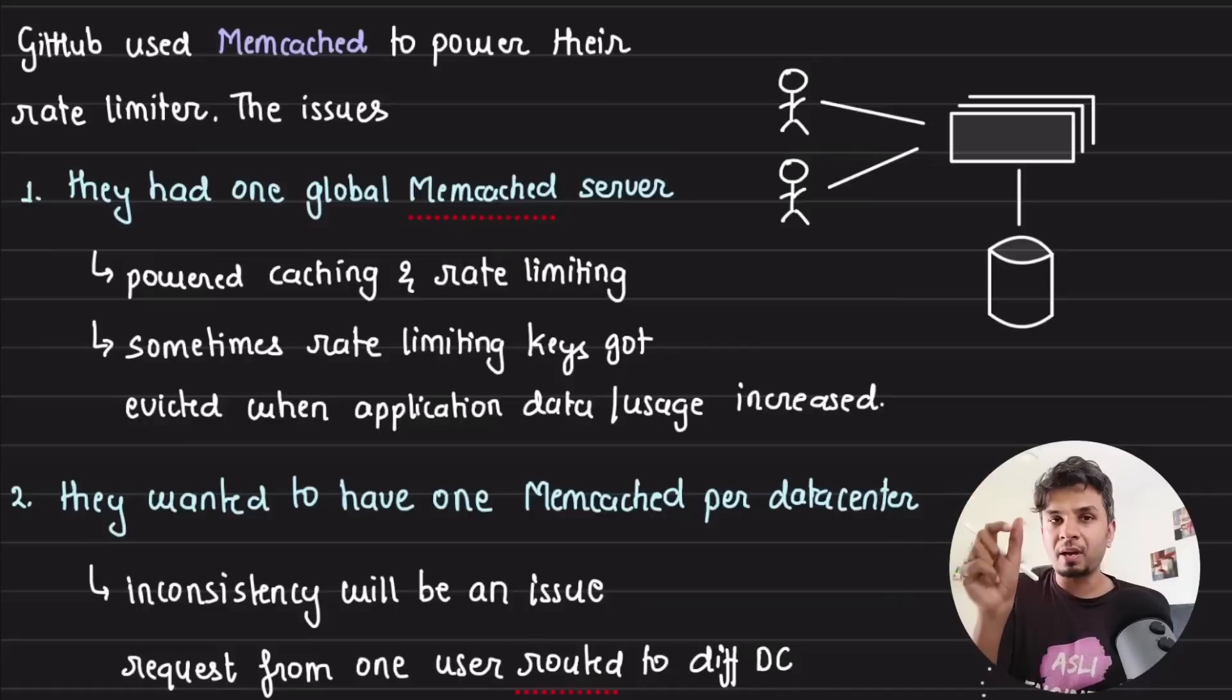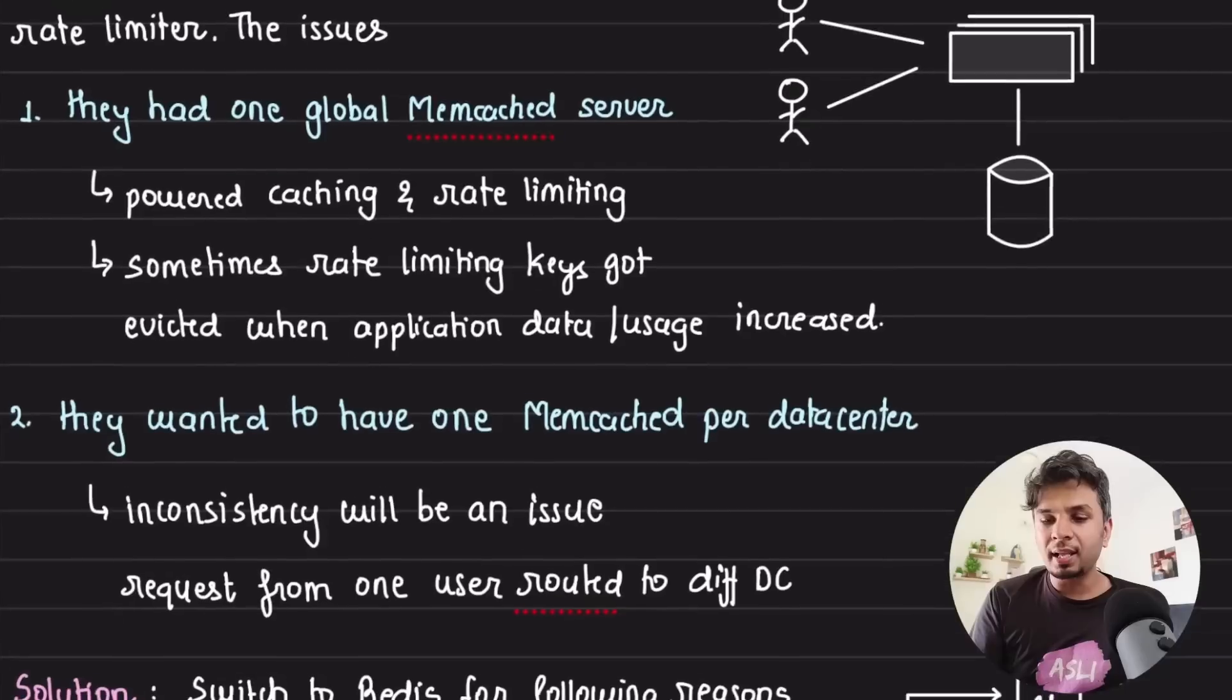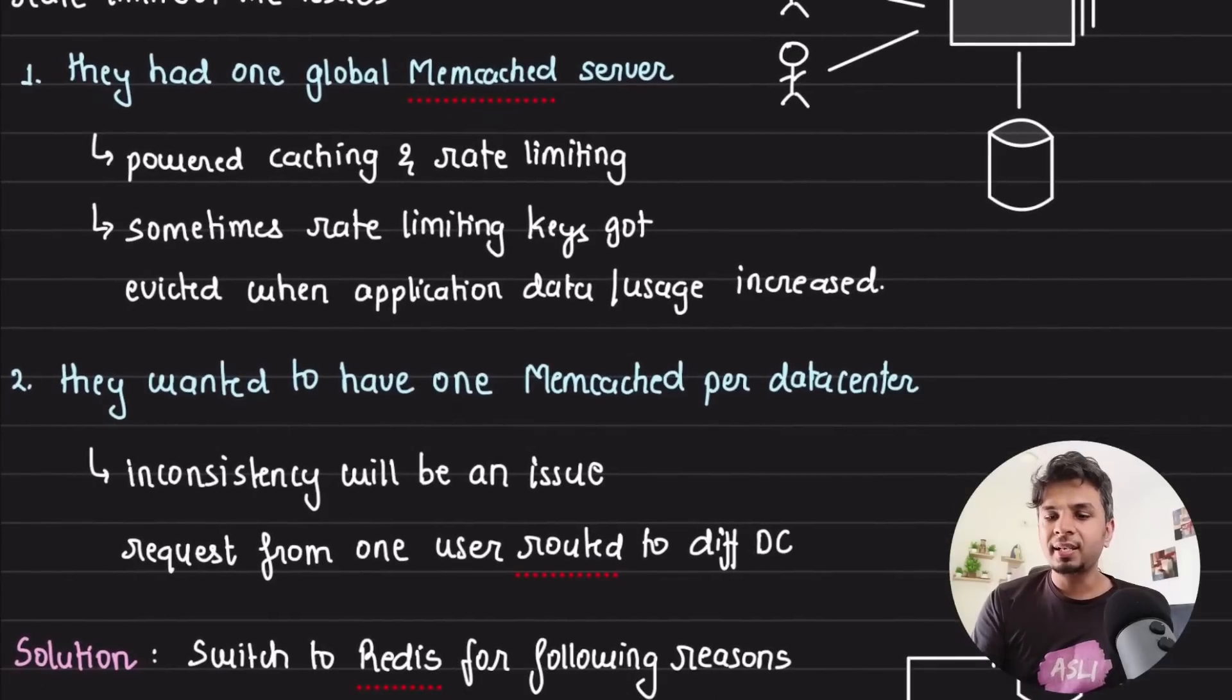Now, when you have two use cases being powered from a single infrastructure, obviously there is a problem. One of the key problems that they faced is when the amount of data being cached by their application use cases increased, your cache typically evicts the key, and Memcached accidentally evicted the keys that were used for rate limiter.